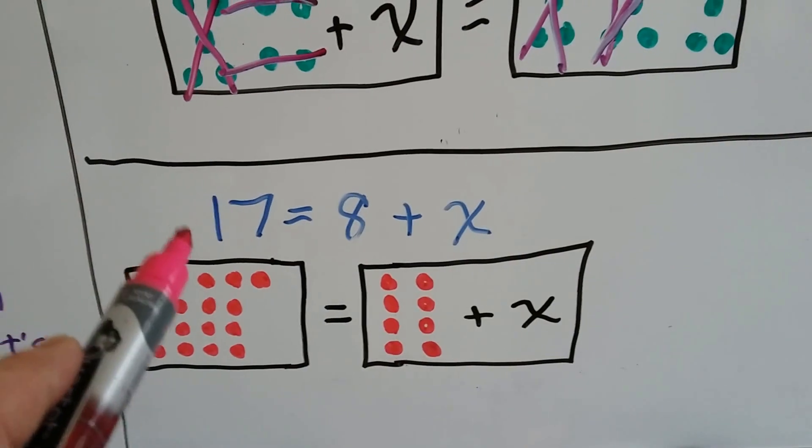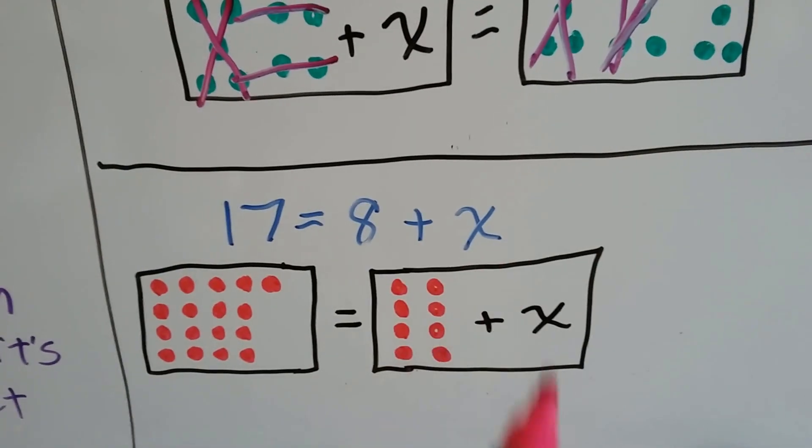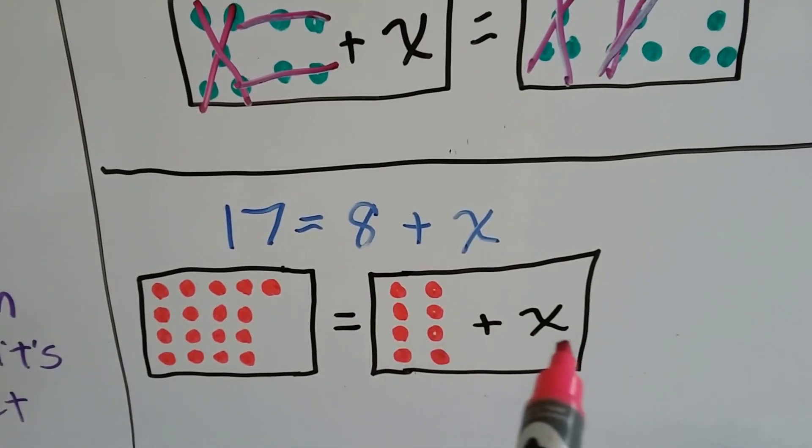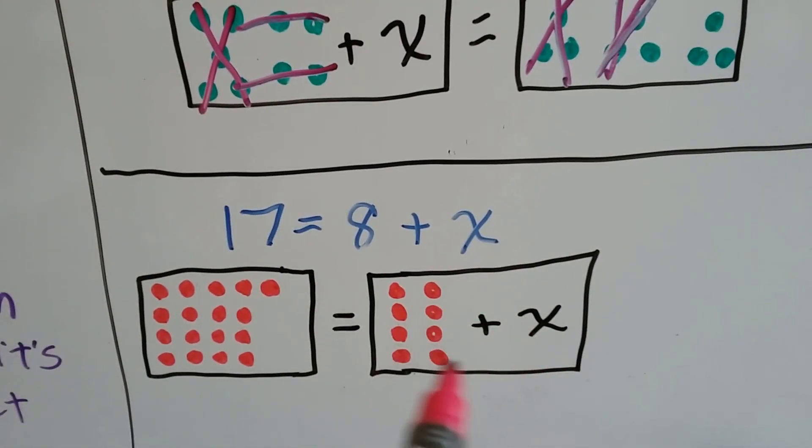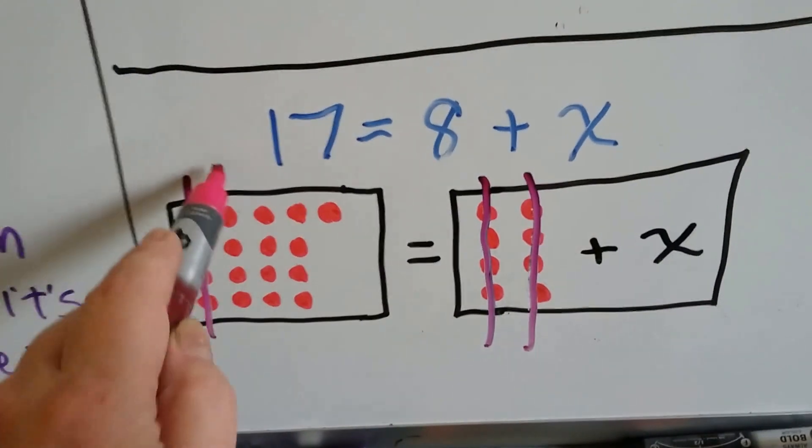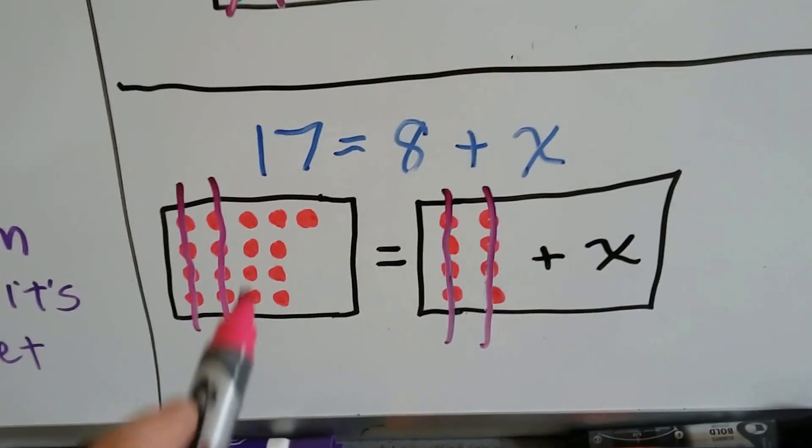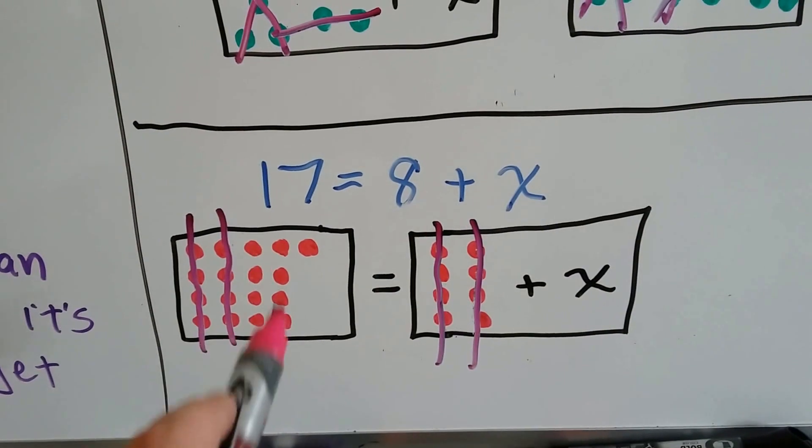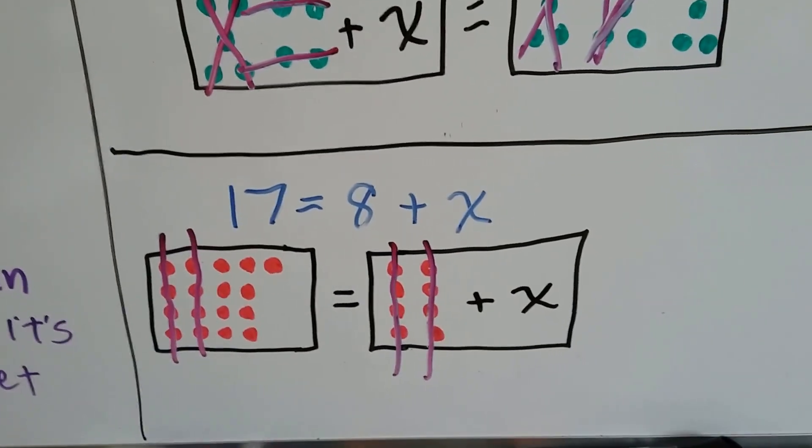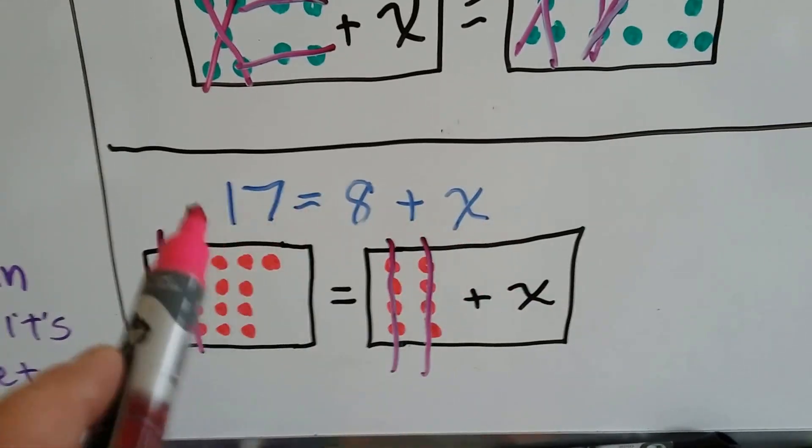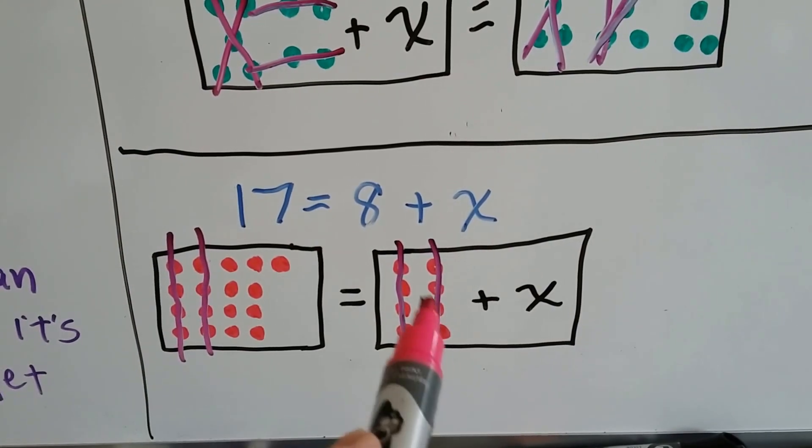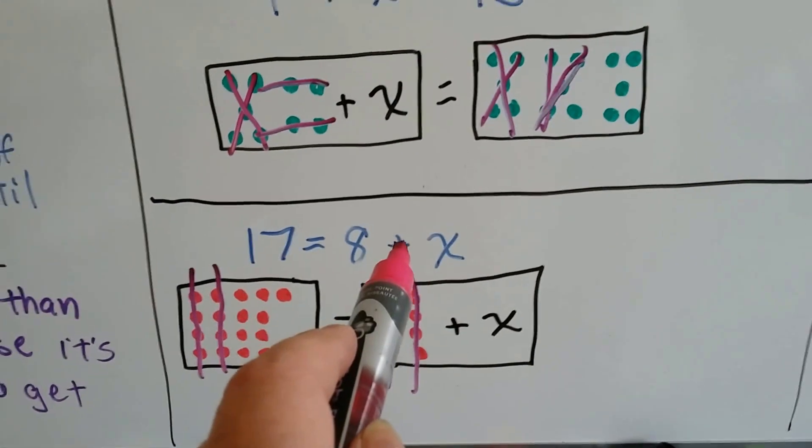Now we've got the sum in the front. 17 equals 8 plus x. So we've got our 17 here and our equal sign and we've got our 8 here and our plus x. We need to get x by itself. So we're going to take away 8 from each side and we're left with x equals 9. So it doesn't matter where the x is as long as it's with another number on the other side of the equal sign. We can isolate it by removing that number if we're doing addition.